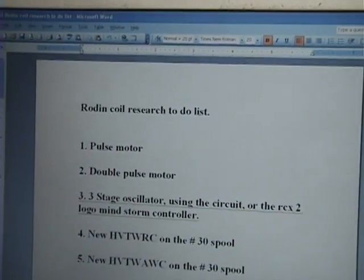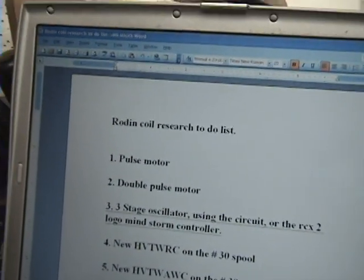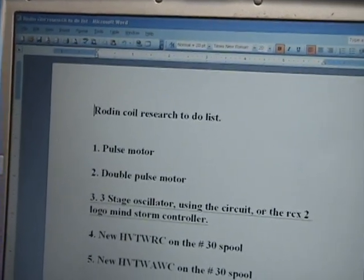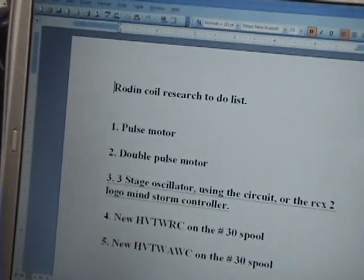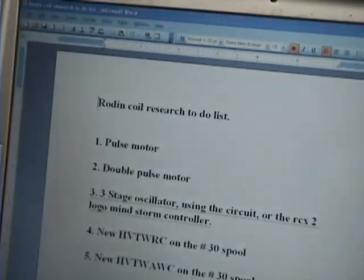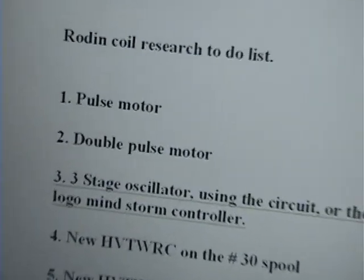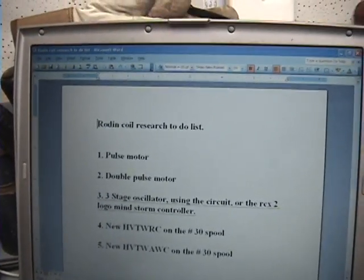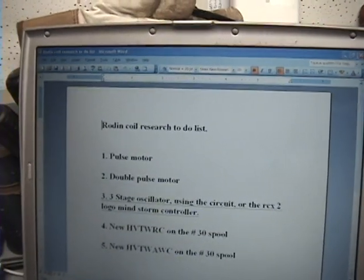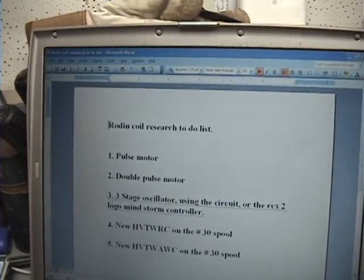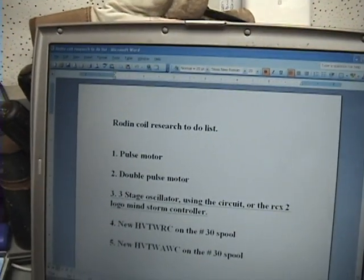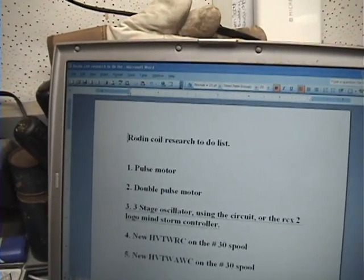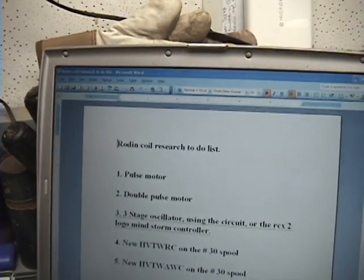First one's a pulse motor which is just, you know, get like a neosphere, get yourself a little hall sensor, make yourself a pulse motor, try some stuff with that. And then what I consider a double pulse motor, which is basically everybody has a single pulse motor where the north or the south comes around and it gets pulsed just on one pole.